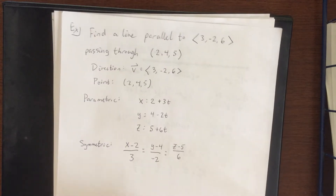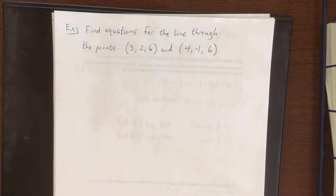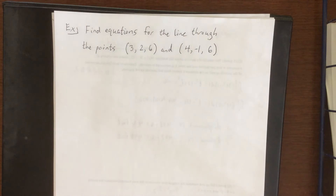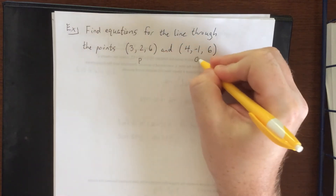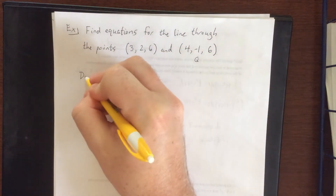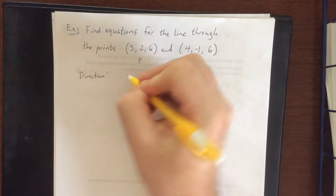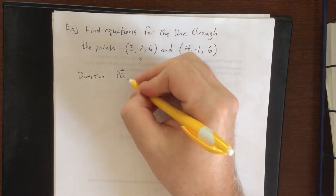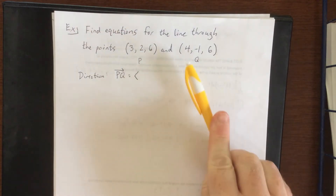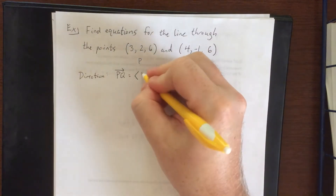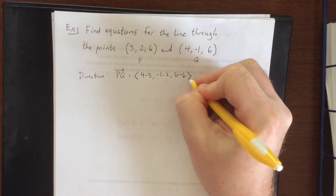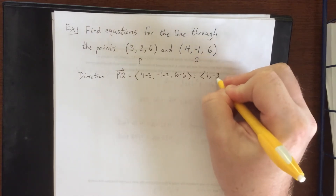Let's try another example. We'll find equations for the line that passes through the points (3, 2, 6) and (4, −1, 6). This time we were not given a direction vector, so we create our own. Calling these points P and Q, the direction vector PQ — treating Q as terminal and P as initial — is (4−3, −1−2, 6−6), which simplifies to <1, −3, 0>.